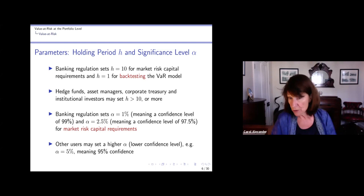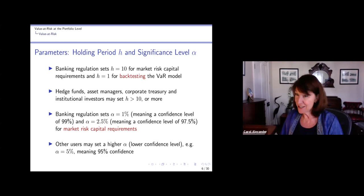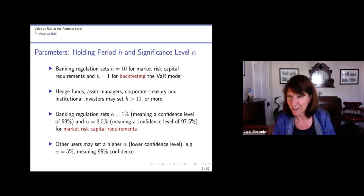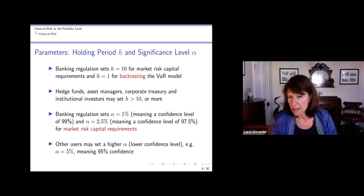But hedge funds or asset managers, corporate treasury, other institutional investors, they don't need to follow those regulations. They could have a much bigger h. Asset managers might report annual VaR figures, so they could have h is 250. And for the alpha, the significance level, banking regulation sets two levels: 1% and 2.5% for the market risk capital requirements which we'll cover in topic eight. But others might set a higher alpha—in other words, a lower confidence level. Very often asset managers will use alpha is 5%; they're only 95% confident, and so that would tend to reduce the VaR. The higher the alpha is, the smaller the VaR.